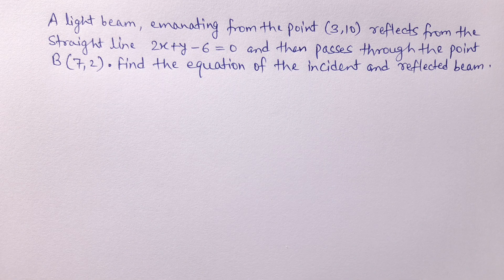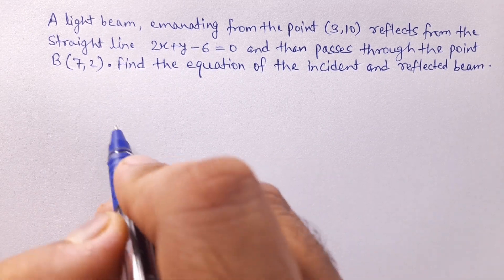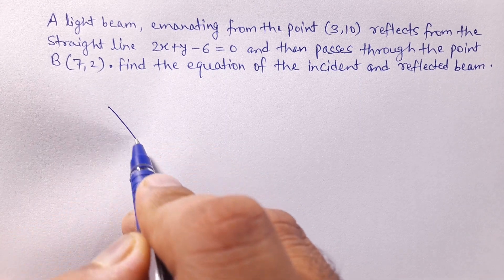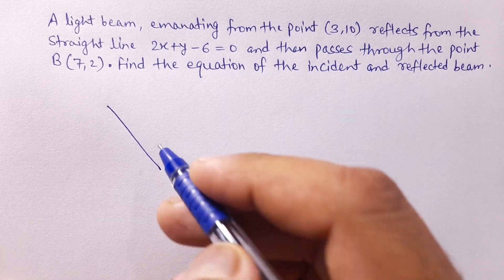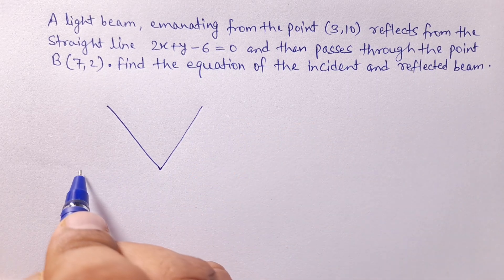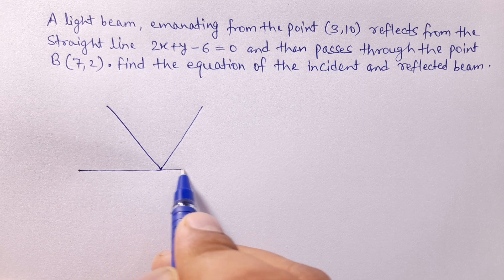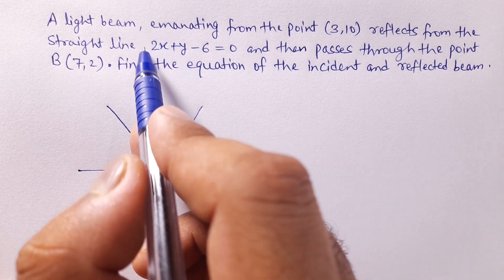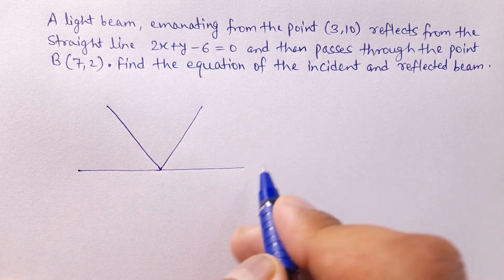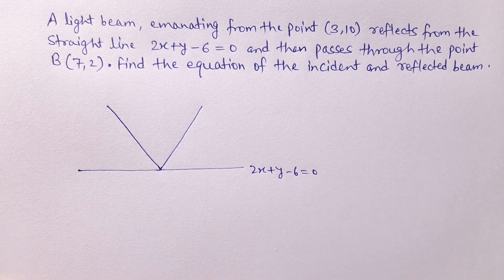So, we need to find the incident and reflected ray. Let this be the incident ray, this be the reflected ray, and this is the line mirror. The line mirror equation is 2x + y - 6 = 0.